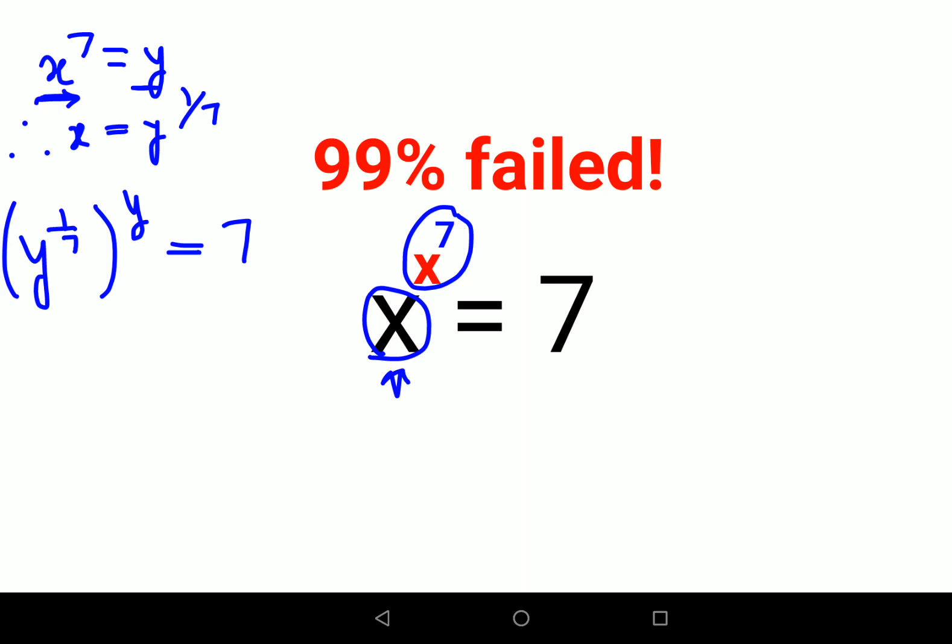Now please understand, there is a law in indices which says a raised to m the whole raised to n is nothing but a raised to m into n. Now as we know, multiplication law is commutative means it can either be written as m into n or n into m. So here we can also say that a raised to m, the whole raised to n can be written as a raised to n, the whole raised to m.